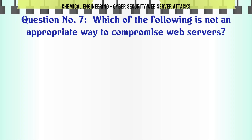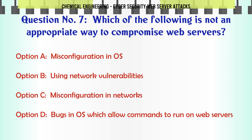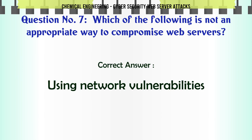Which of the following is not an appropriate way to compromise web servers? A. Misconfiguration in OS. B. Using network vulnerabilities. C. Misconfiguration in networks. D. Bugs in OS which allow commands to run on web servers. The correct answer is B. Using network vulnerabilities.